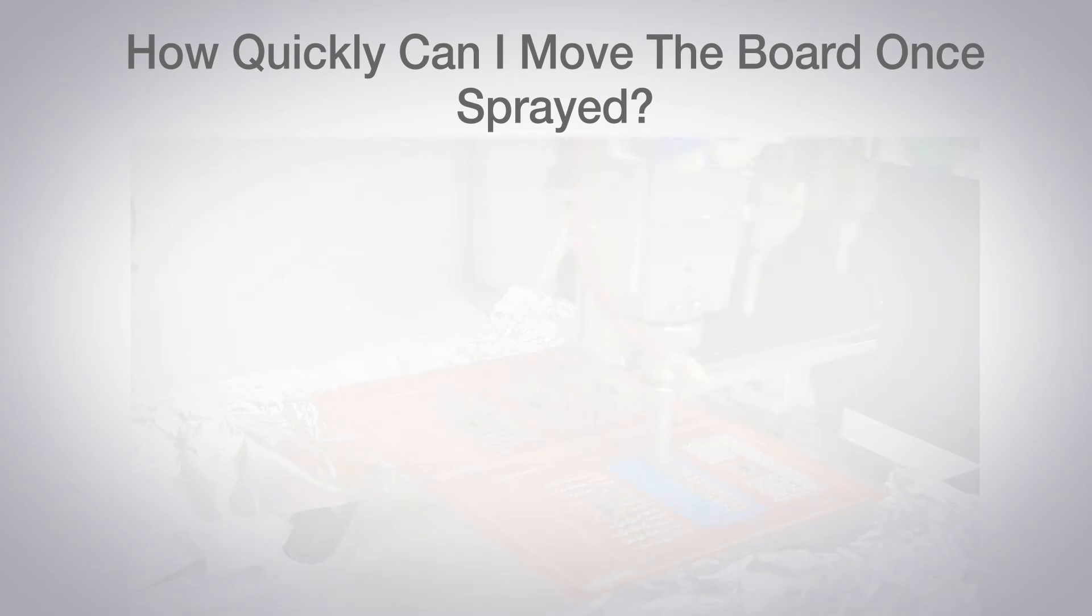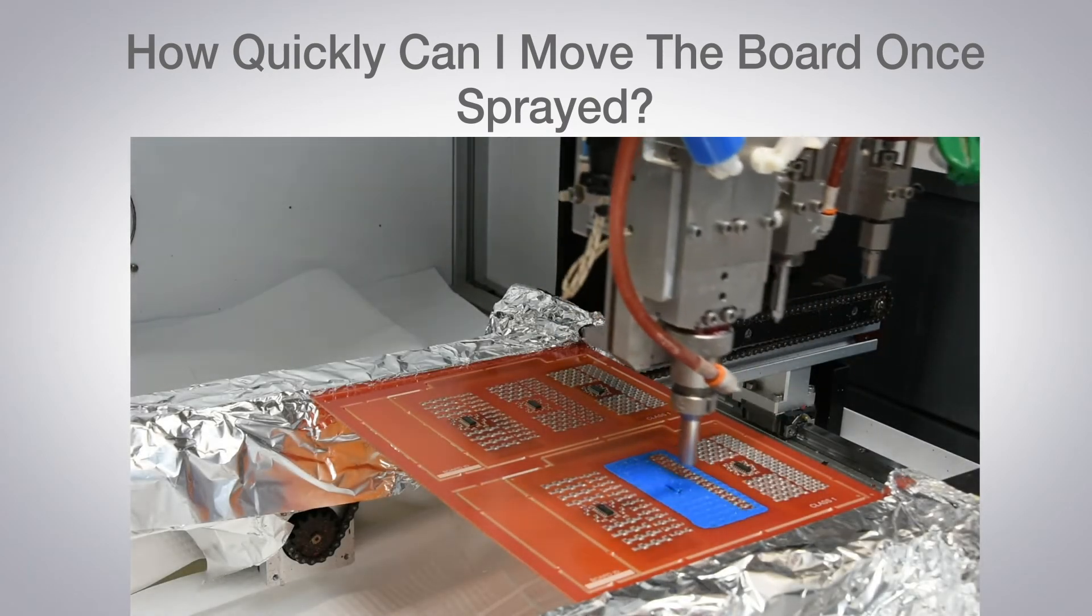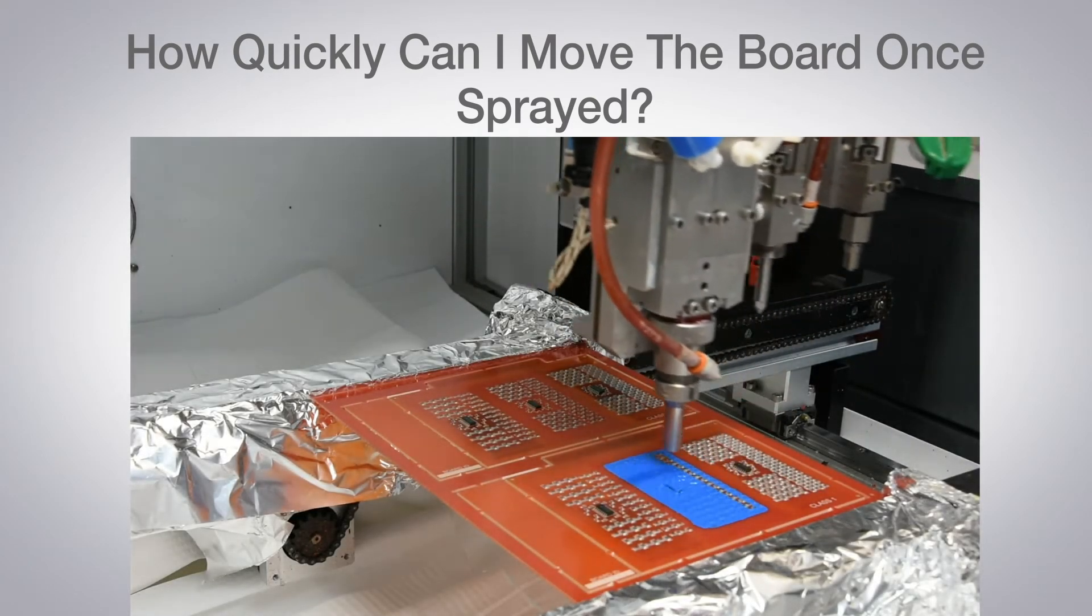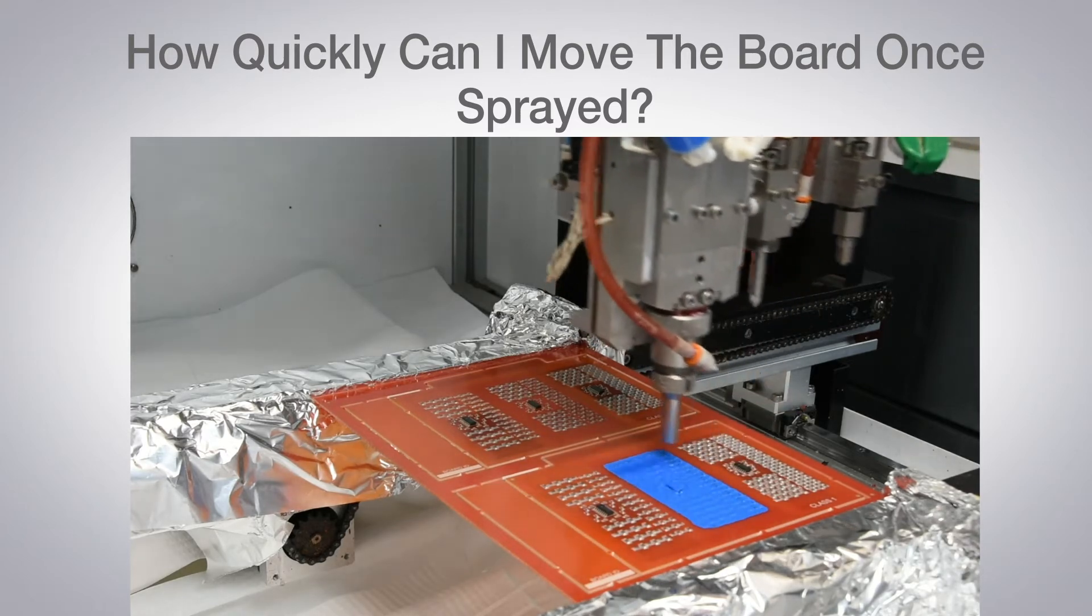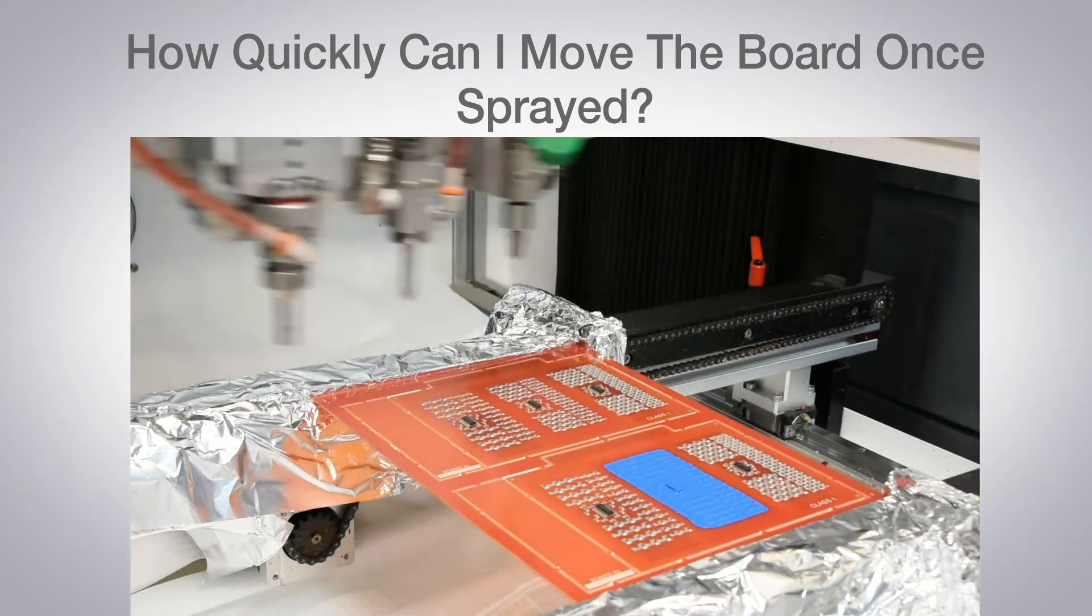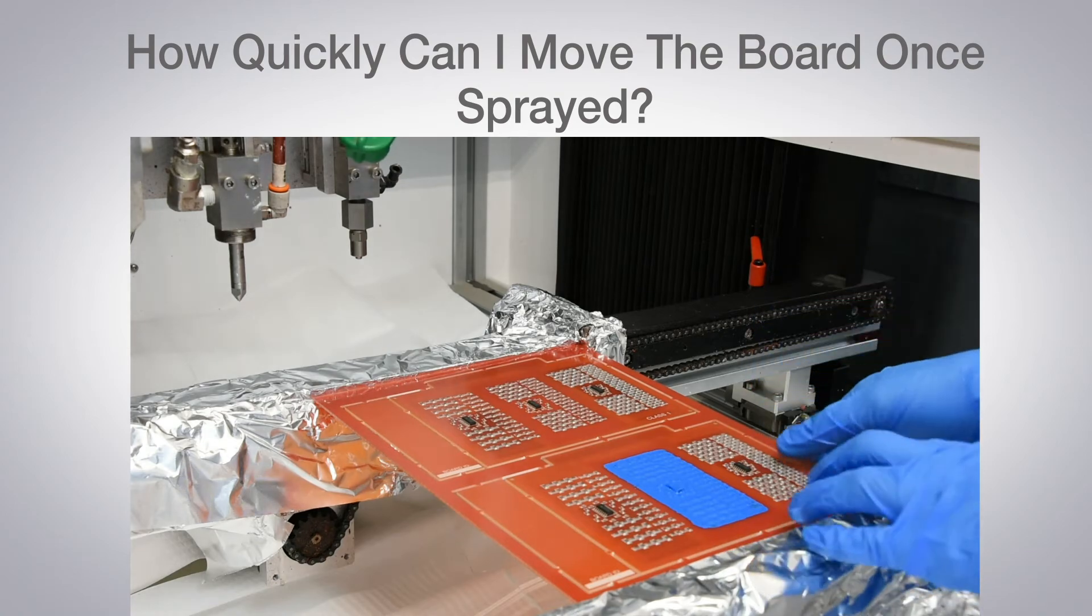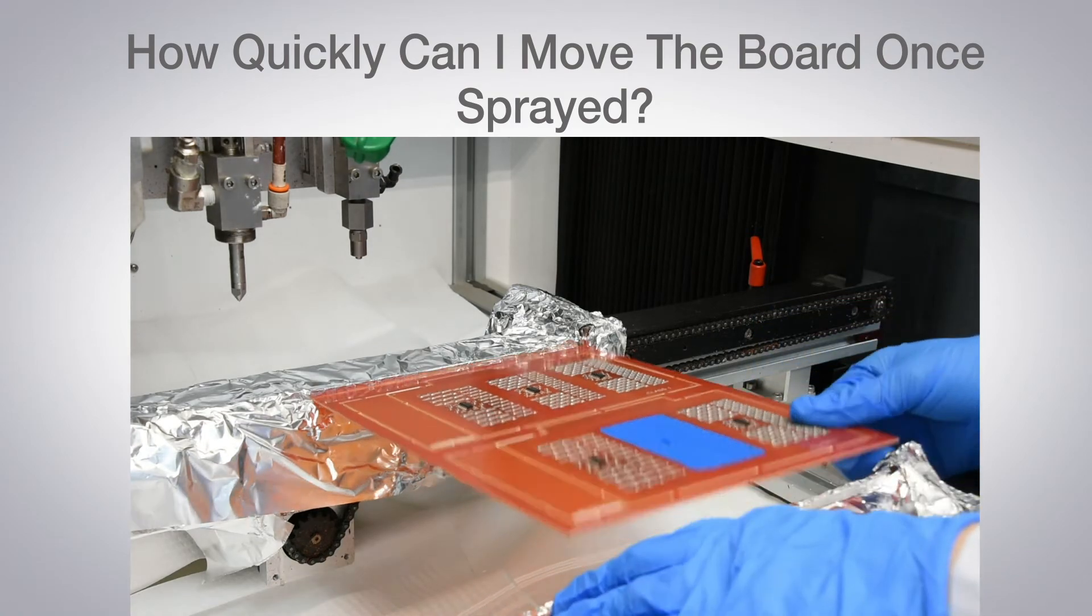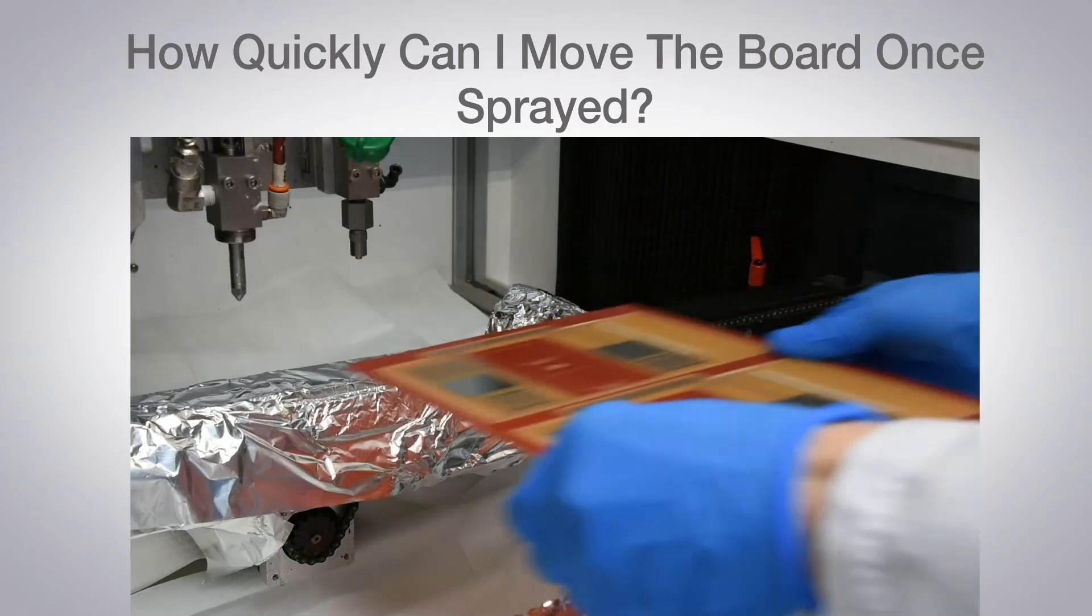How quickly can I move the board once sprayed? One of the major benefits of 2K materials over solvent coatings is that you can handle the boards immediately after application. This even allows you to turn the board over and coat the underside within seconds of coating the top.